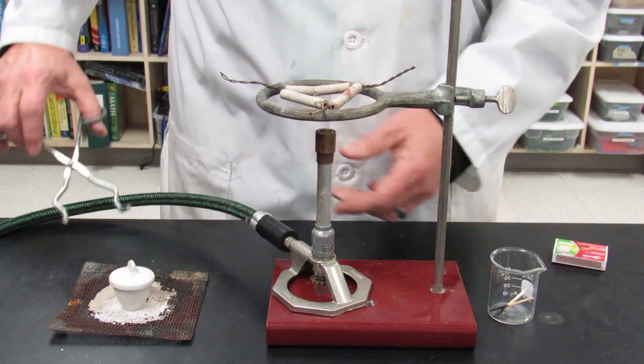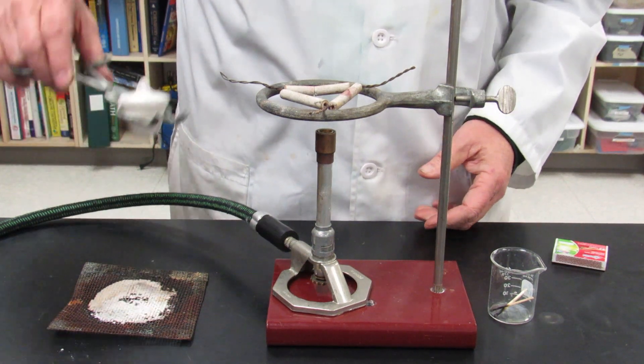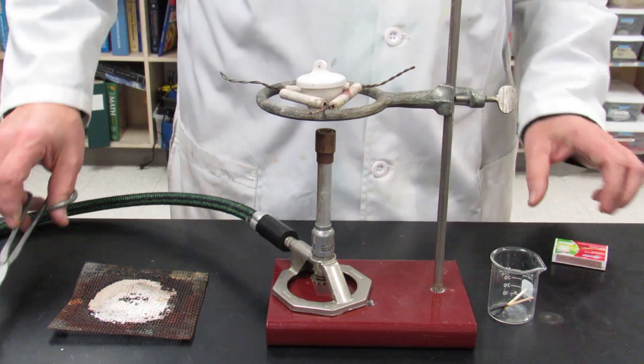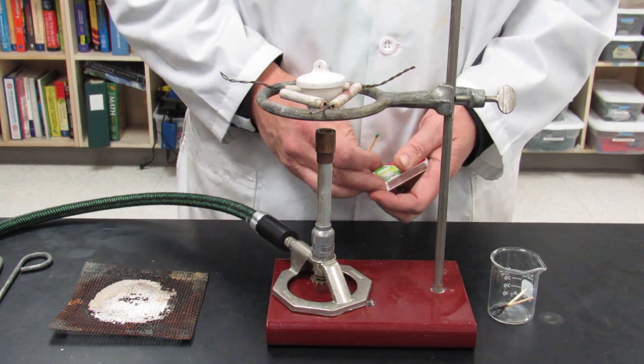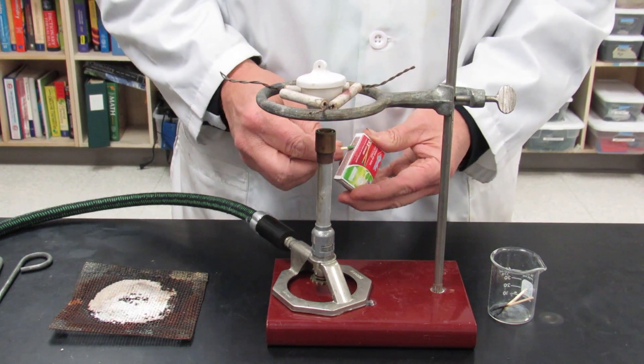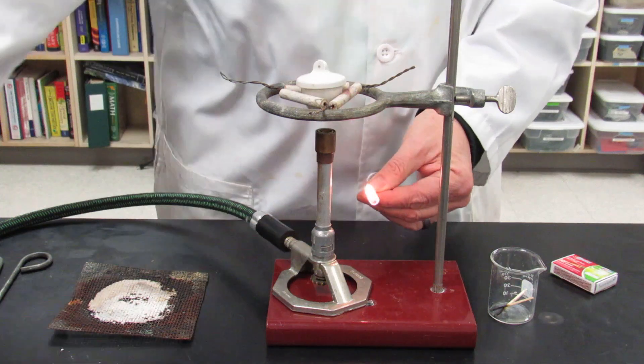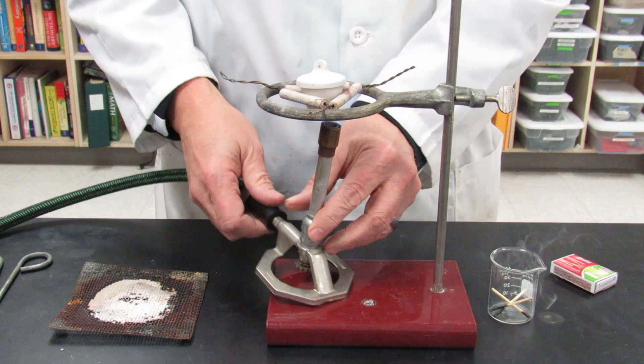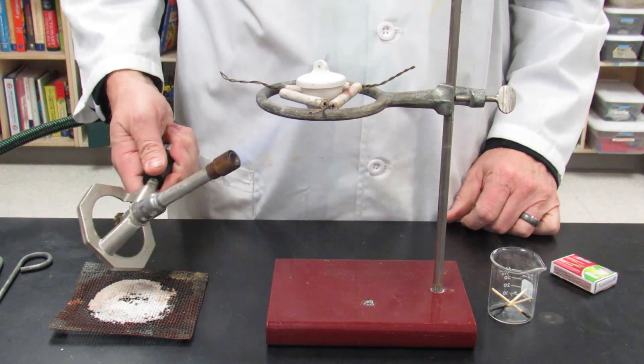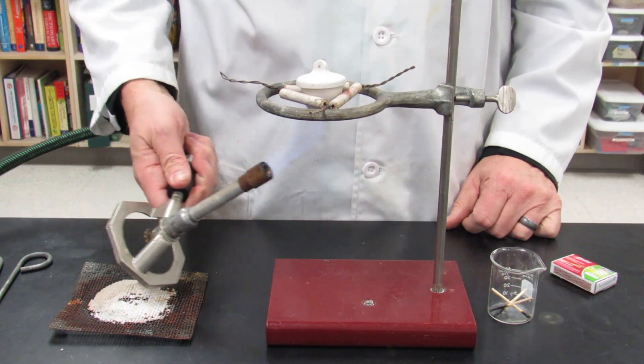Now it's time to oxidize magnesium. You're going to put the crucible on the flame. Light the match. Turn on the gas. Turn the flame up. Get a good hearty flame. Gently start. Always gently start for a minute or two.